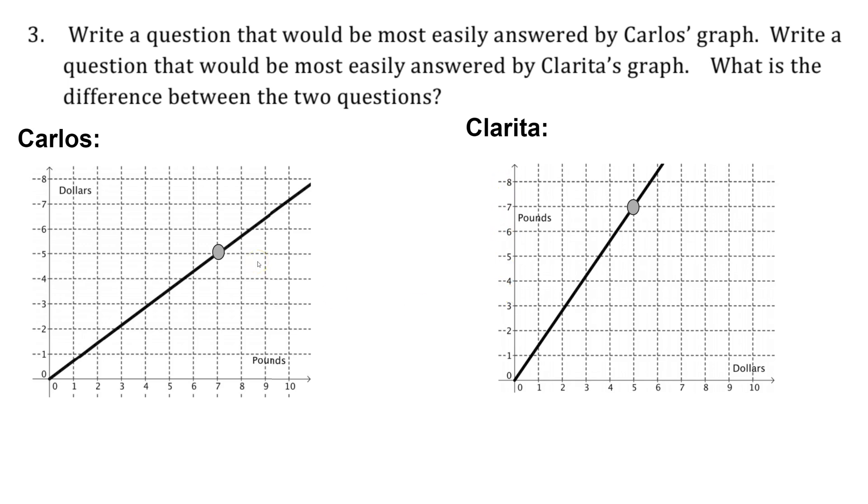Back in question two, it asks us to write an equation for each of these graphs. So Carlos would have gotten the equation D equals 5 sevenths P, and that's because the slope is a rise of 5 and a run of 7 to get to this point, and this is a linear function. And the y-intercept is 0.